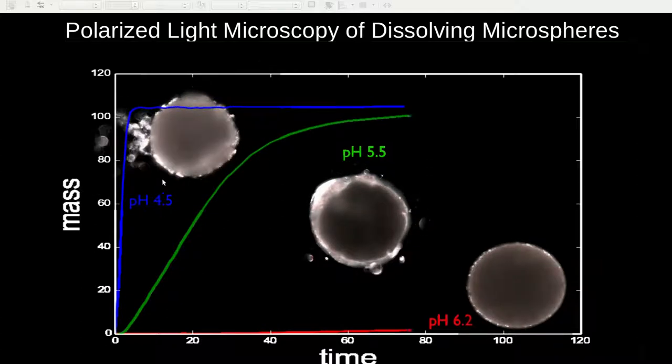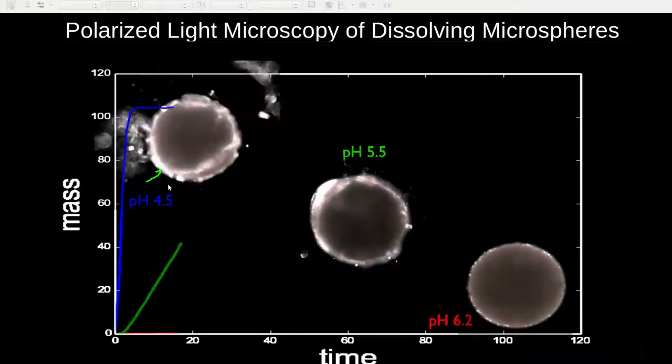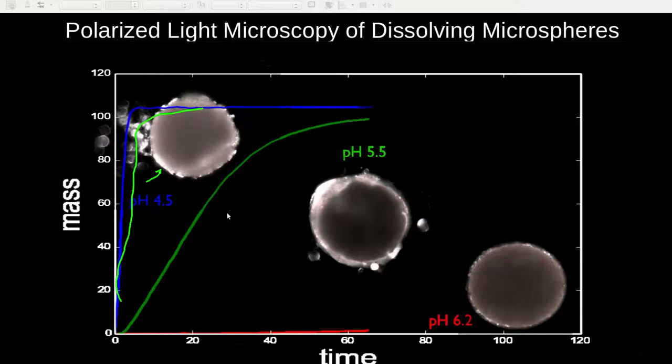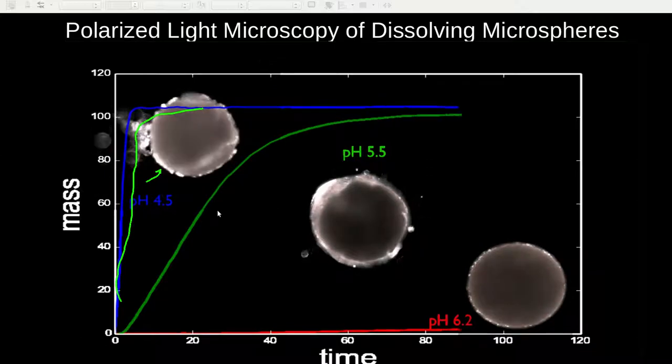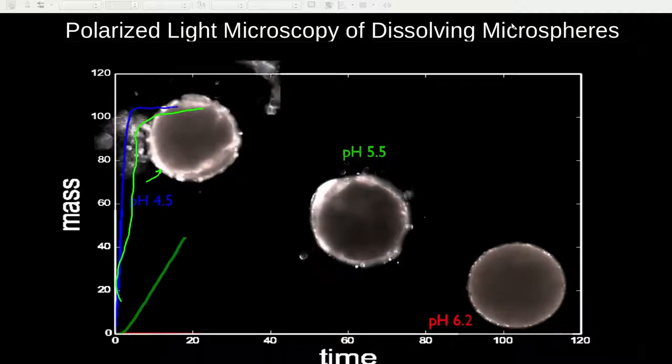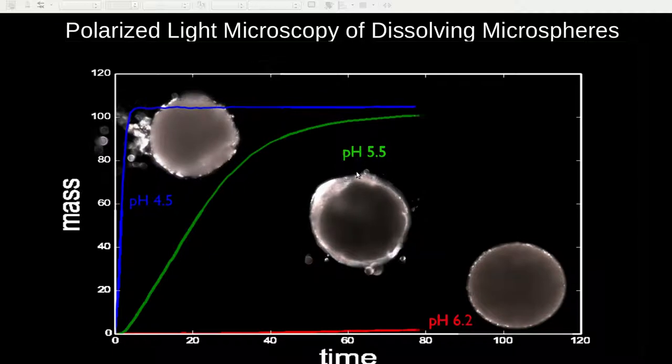At the lowest pH of 4.5, we see that the polymer rapidly dissolves and hence releases the API, as can also be seen by the rapid increase at very short times as measured by dissolution bath. The important message here is that the polymer itself is what is controlling the dissolution rate.